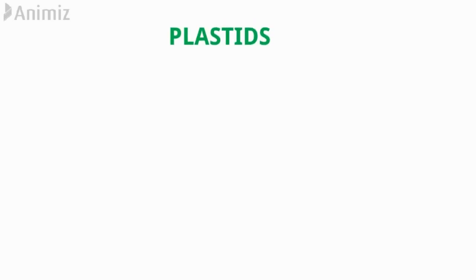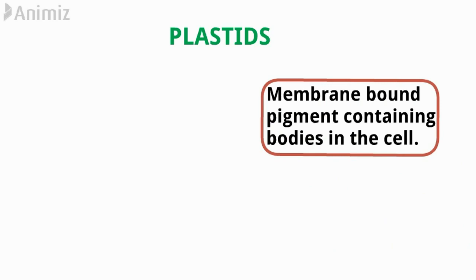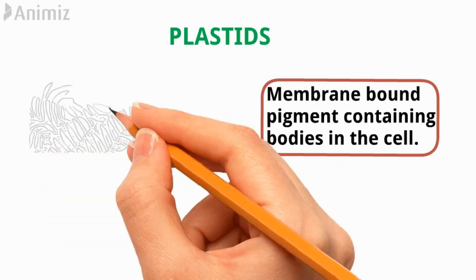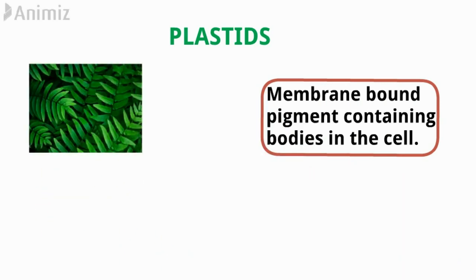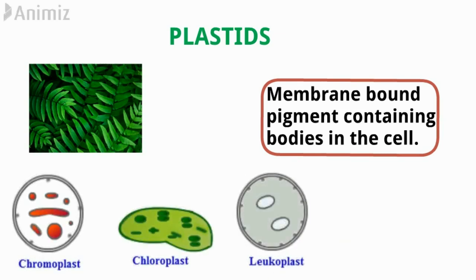Today our topic is Plastids. Plastids are the membrane-bound, mostly pigment-containing bodies present in the cells. Plastids are present only in plant cells, and there are three main types of Plastids: Chloroplast, Chromoplast, and Leucoplast.